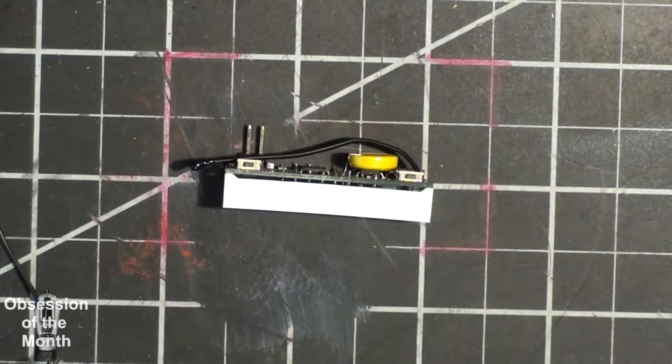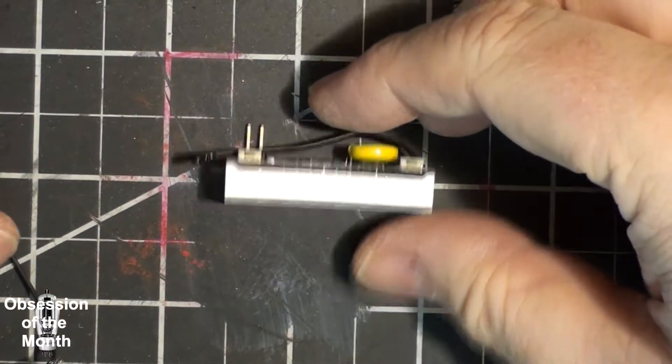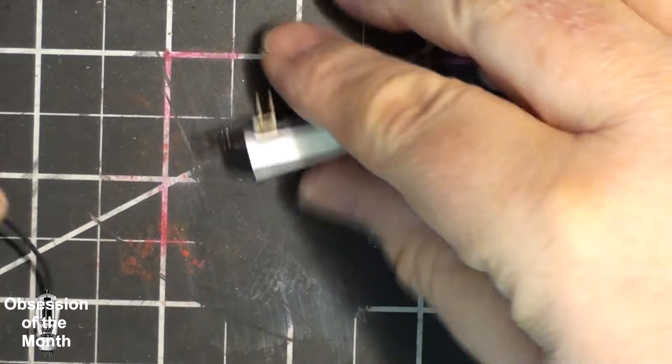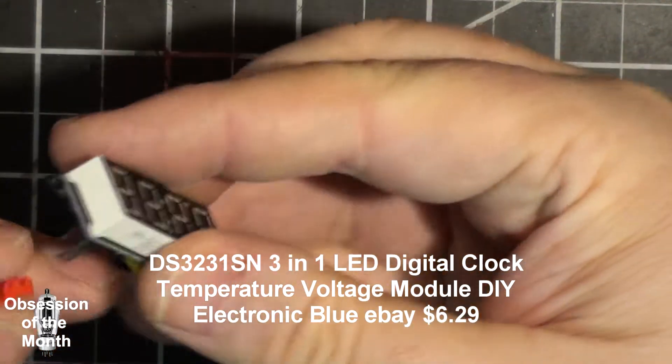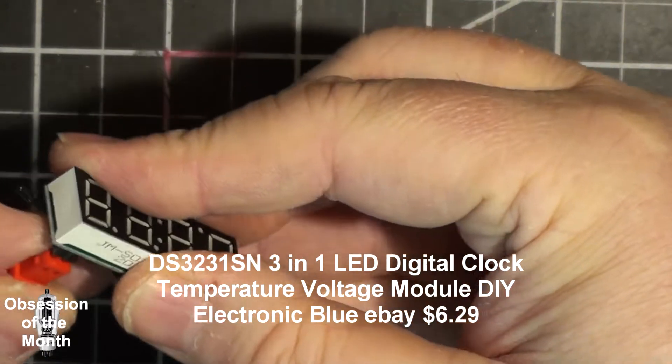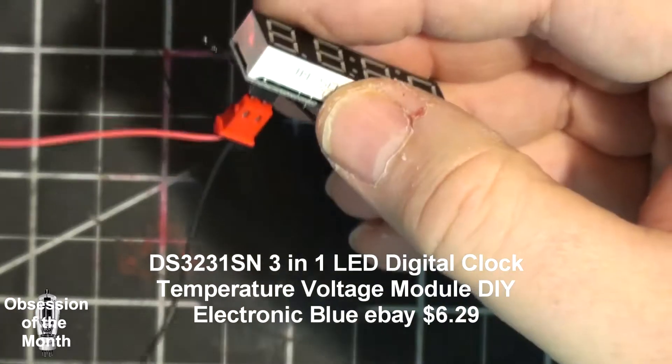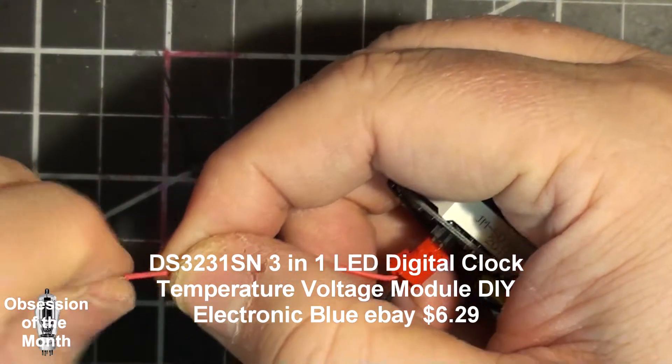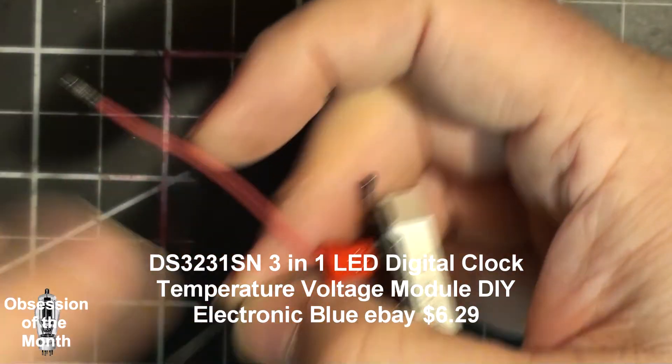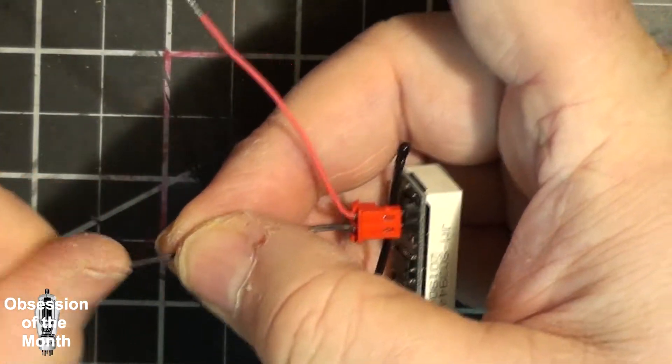Okay, this morning is a video about a little clock unit that I picked up for a project. These are listed as three-in-one clocks. They tell the time, the temperature, and the voltage.